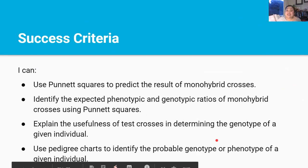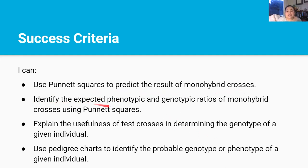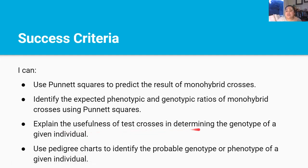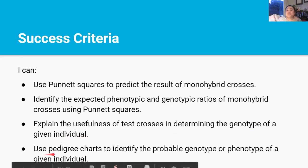You've reached the end of this lesson. By now you should be able to use Punnett squares to predict the result of monohybrid crosses, identify the expected phenotypic and genotypic ratios using Punnett squares, explain the usefulness of test crosses in determining the genotype of a given individual, and use pedigree charts to identify the probable genotype or phenotype of a given individual. Thanks for watching and I'll see you in the next video.